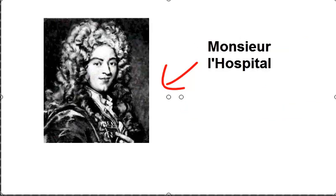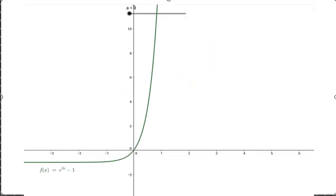This is where L'Hopital's rule comes in. Let's look at the graphs of the two functions which make up our quotient and see if we can get a geometric intuition for how we might evaluate this limit.